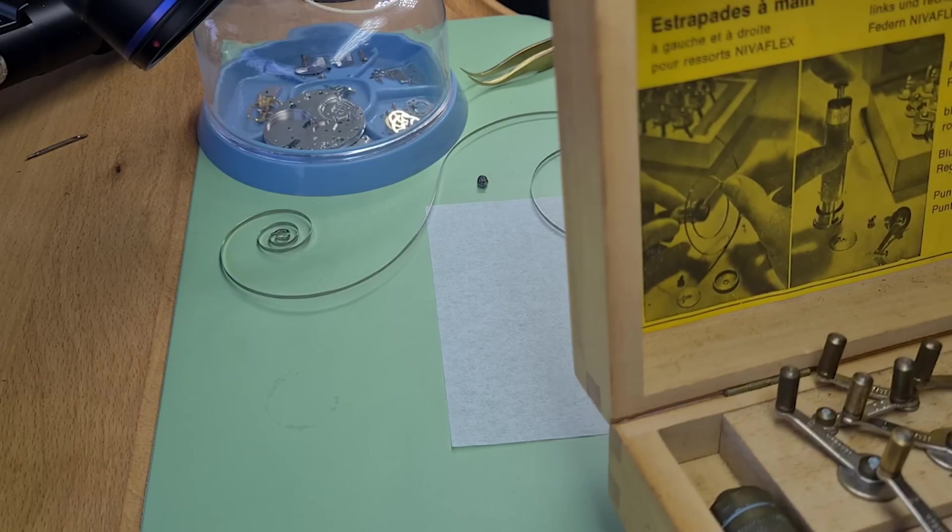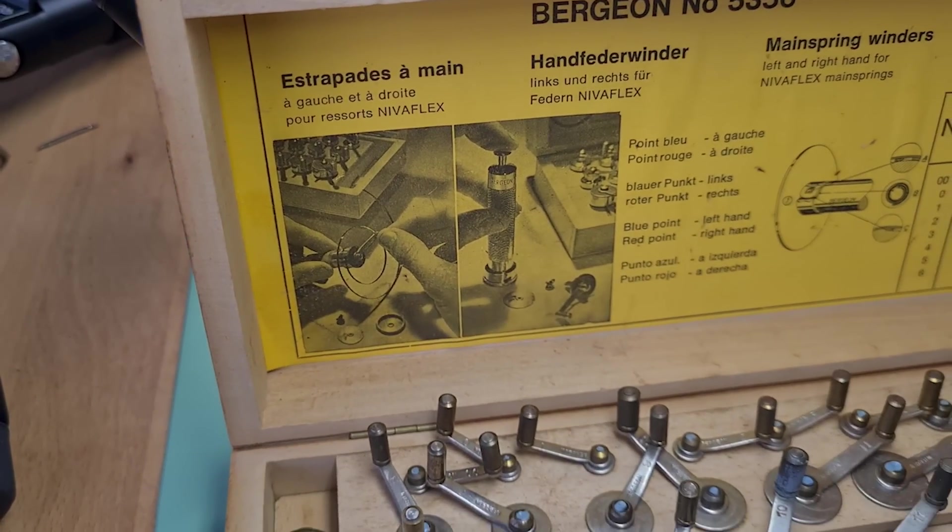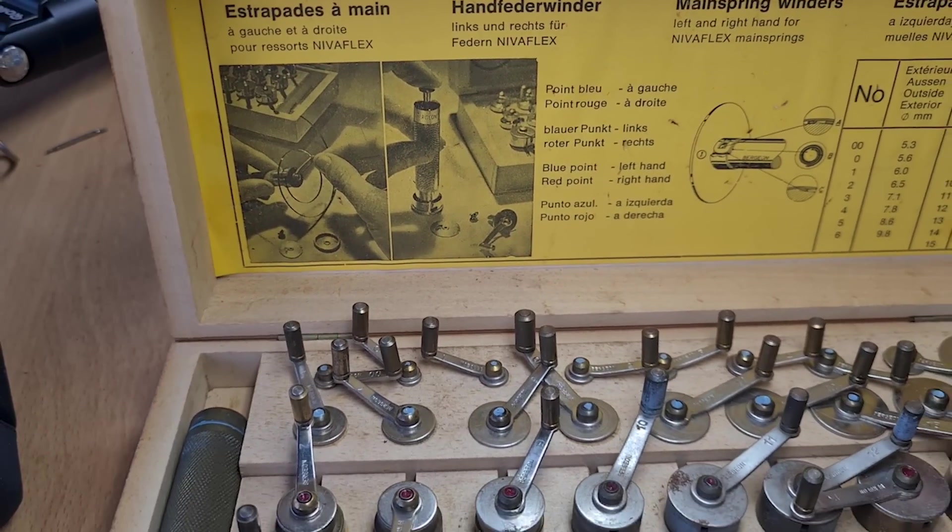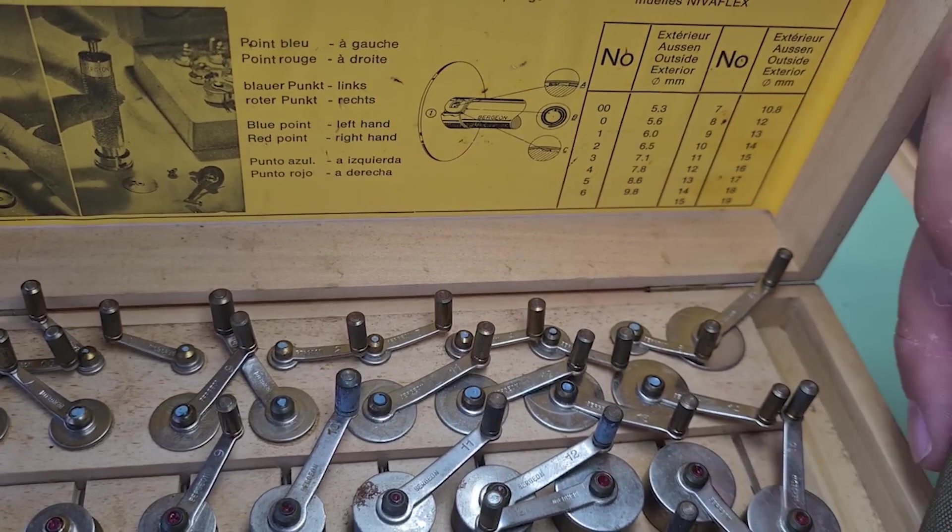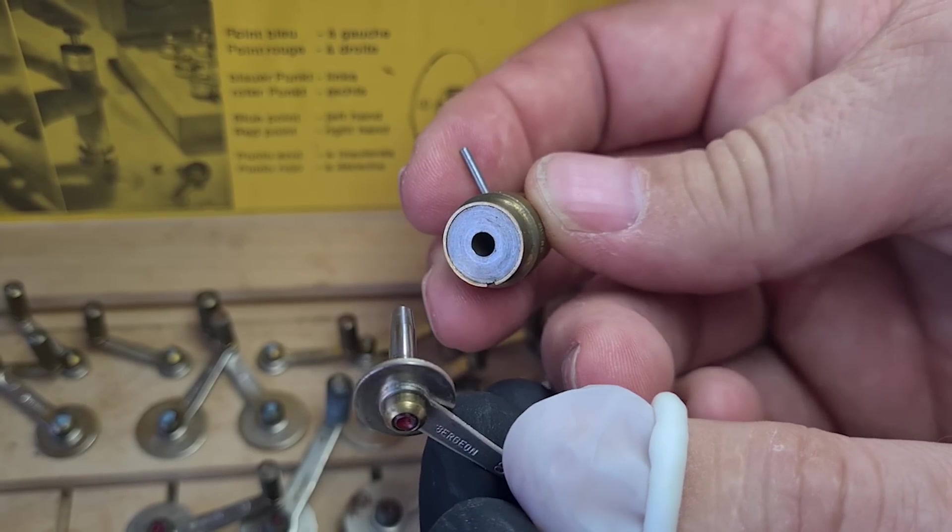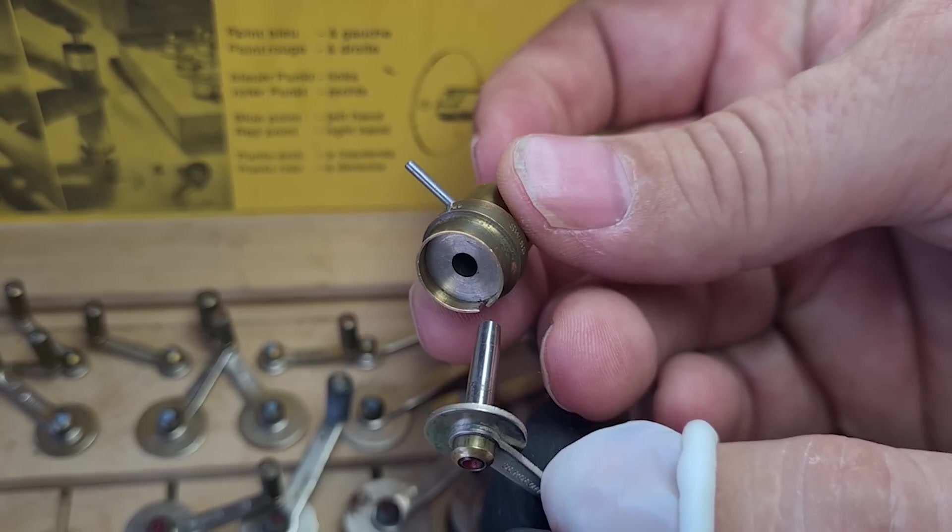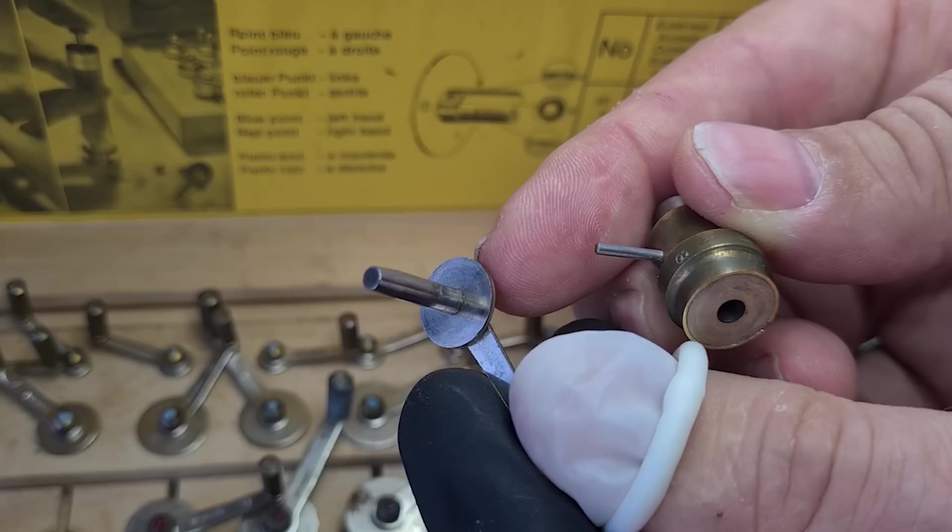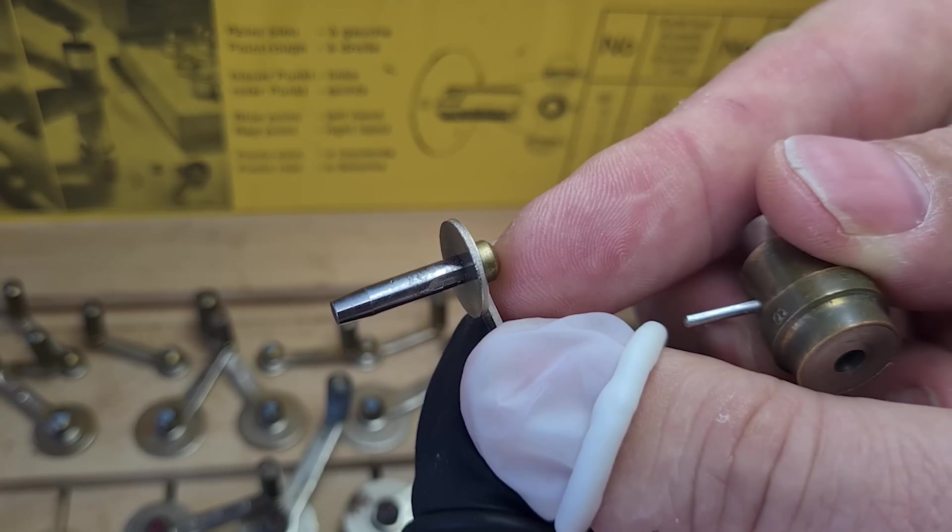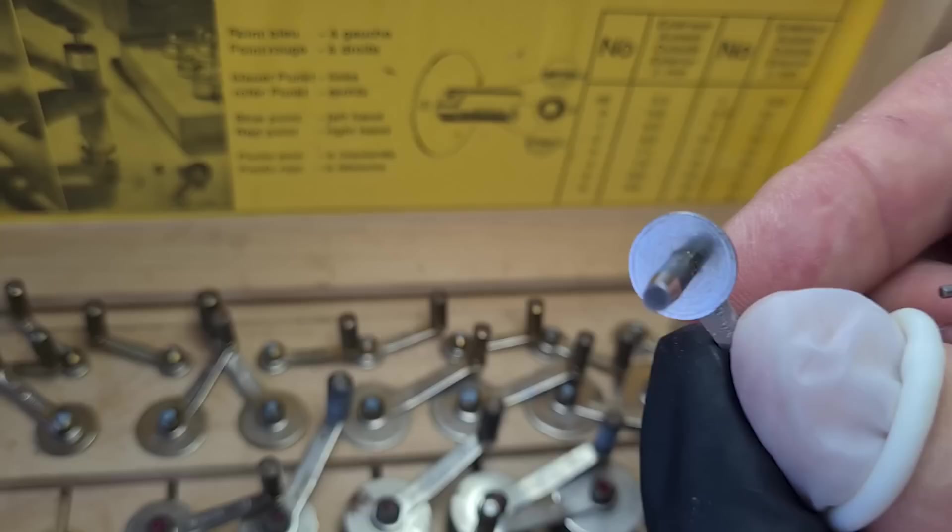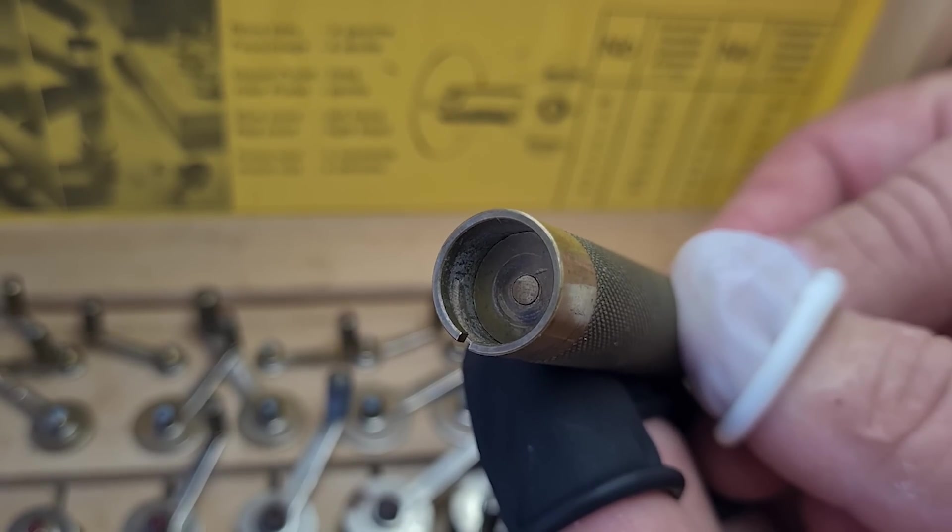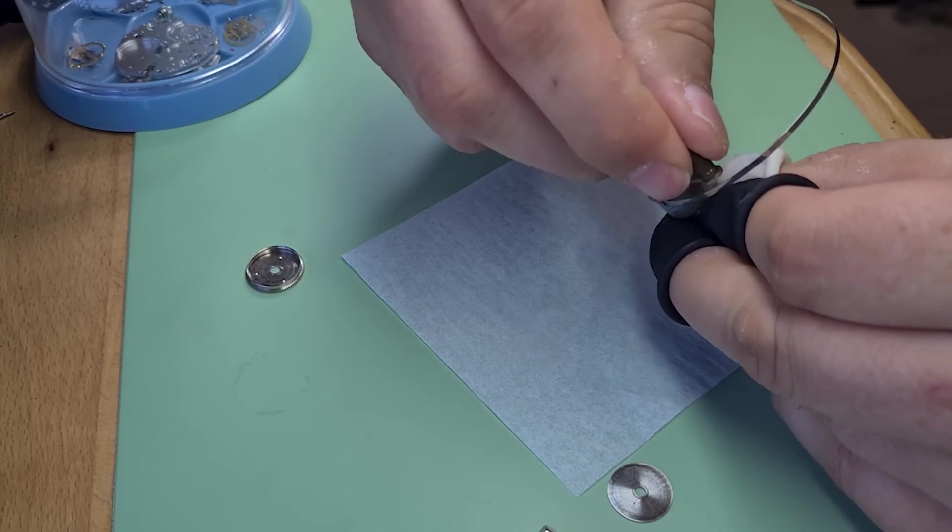Now, one thing about watchmakers, they are tool junkies. Some of the tools are absolutely necessary, like mainspring winders, because putting the mainspring into the barrel by hand will damage it. This tool has a lot of different sizes of barrels and barrel arbors. And then we use this plunger to actually press the mainspring into the actual barrel.